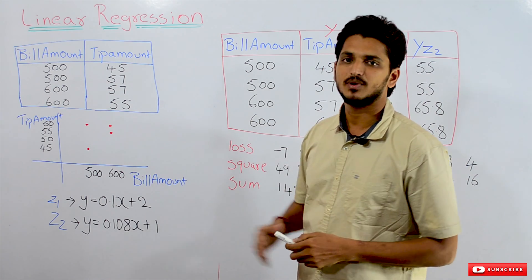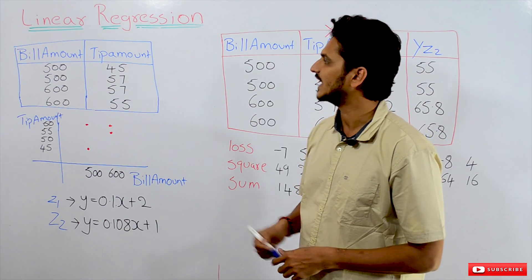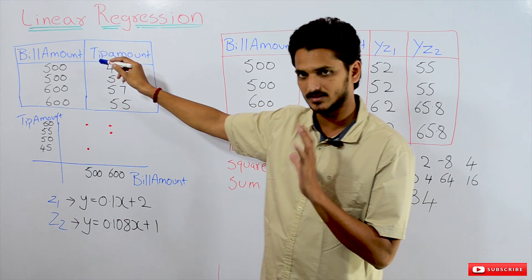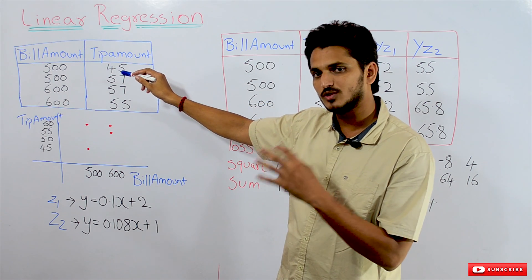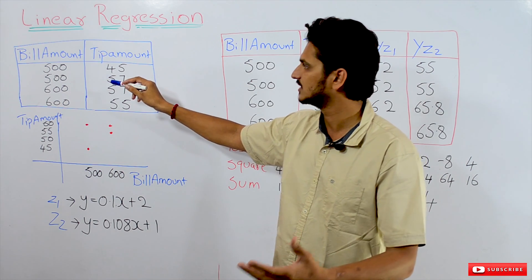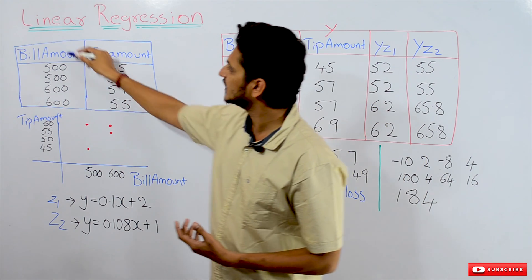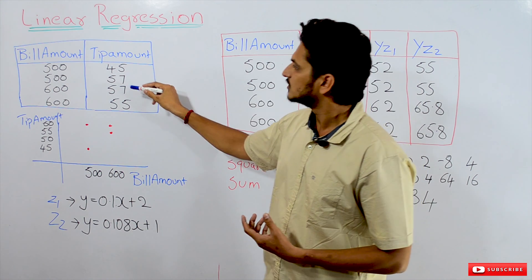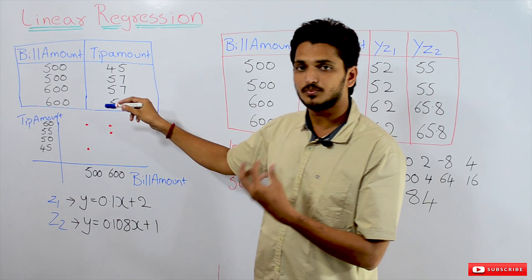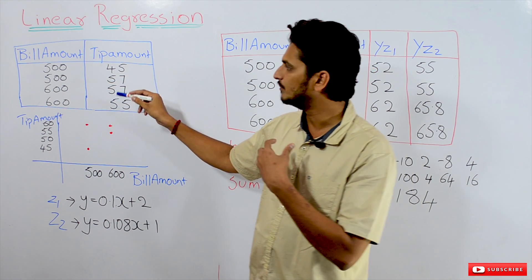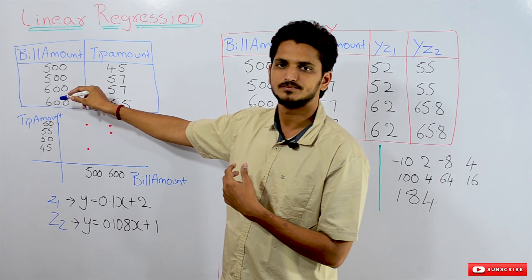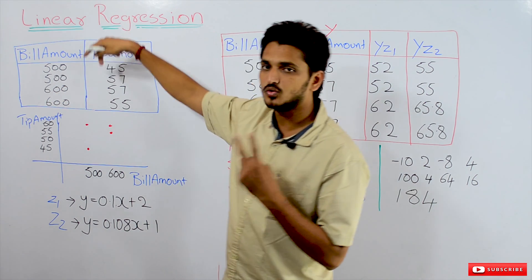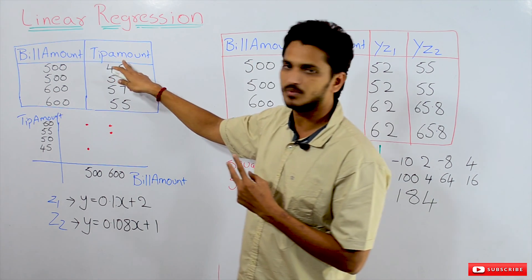Let's take an example and understand what this model is. The example we consider here is a tip amount prediction dataset. This example we are using from our first class. This dataset has a bill amount and tip amount data. This dataset has two columns: bill amount and tip amount.